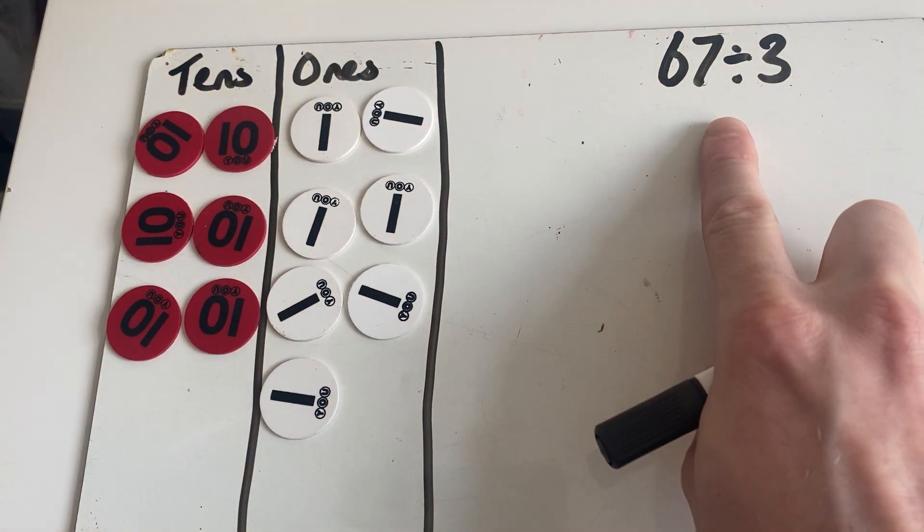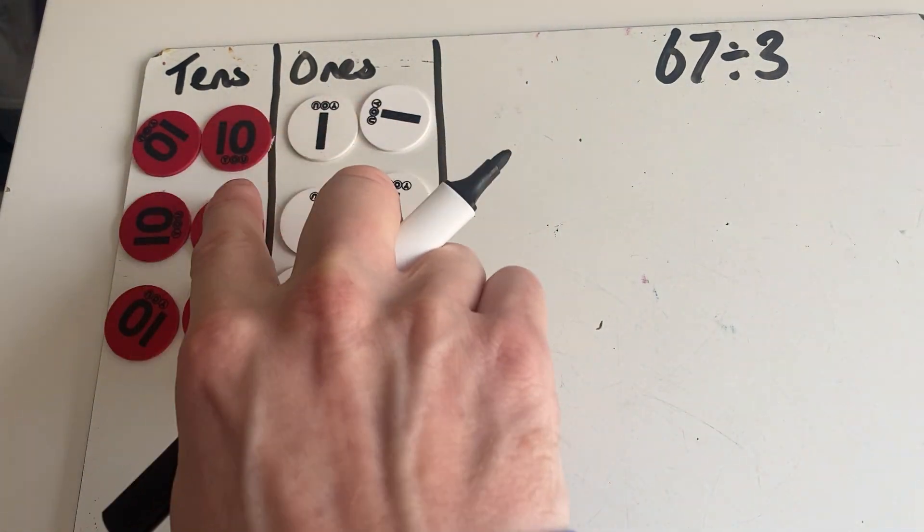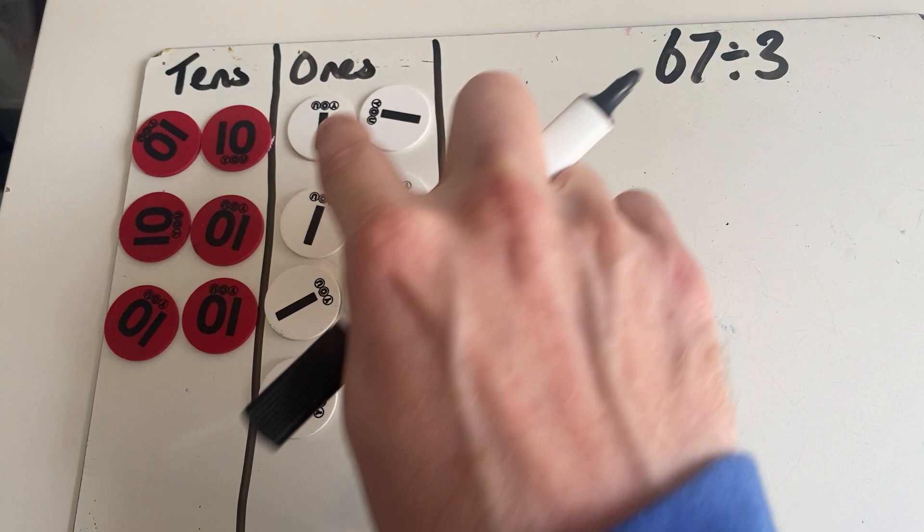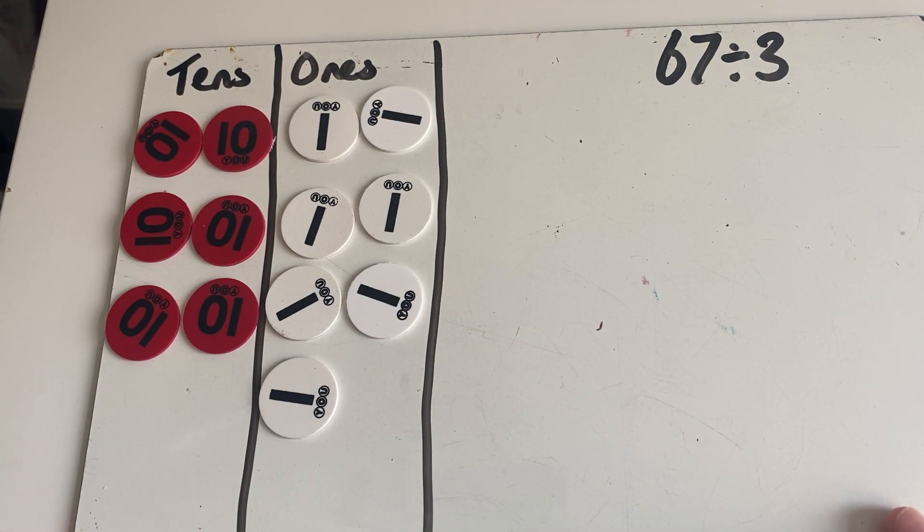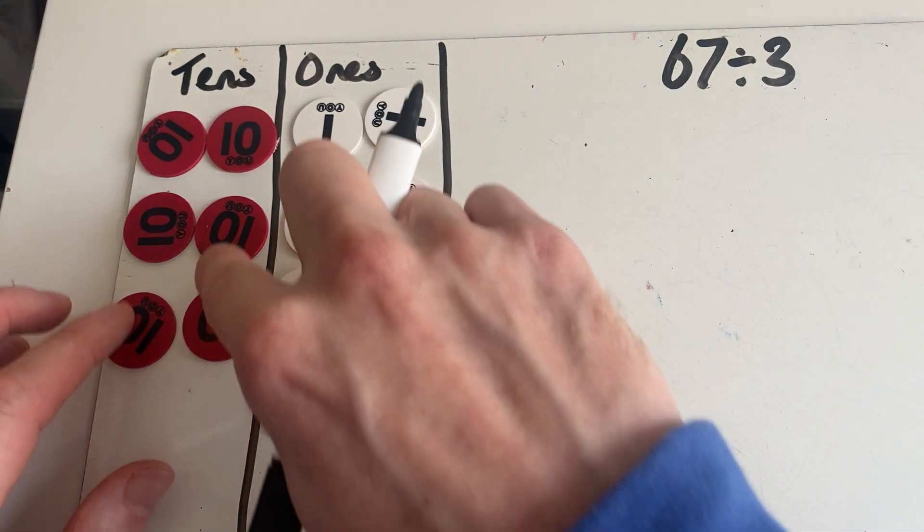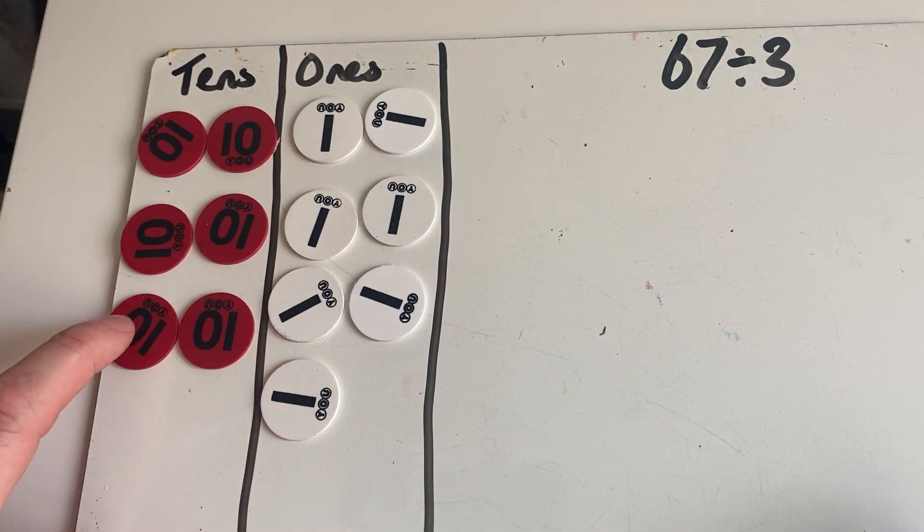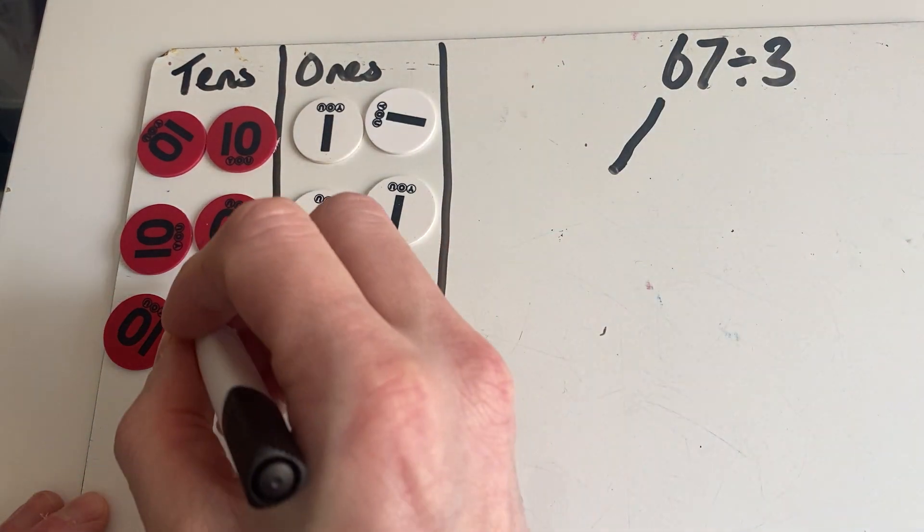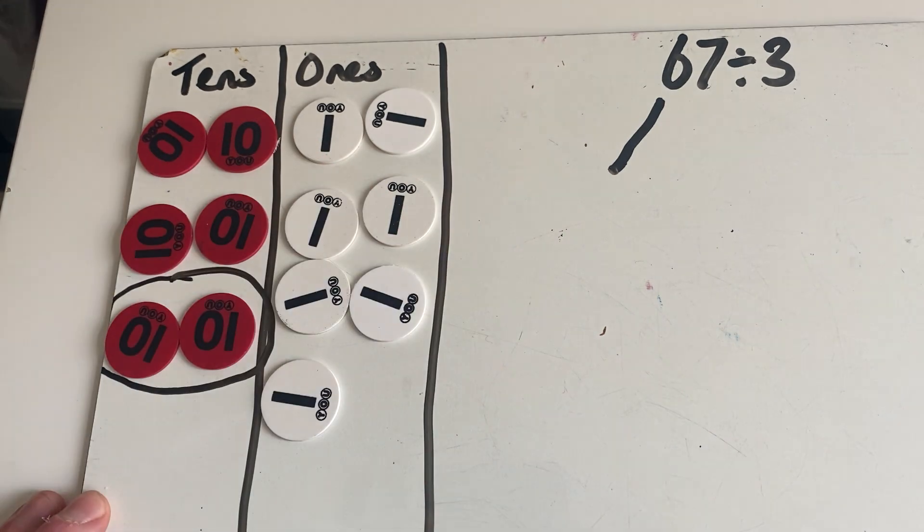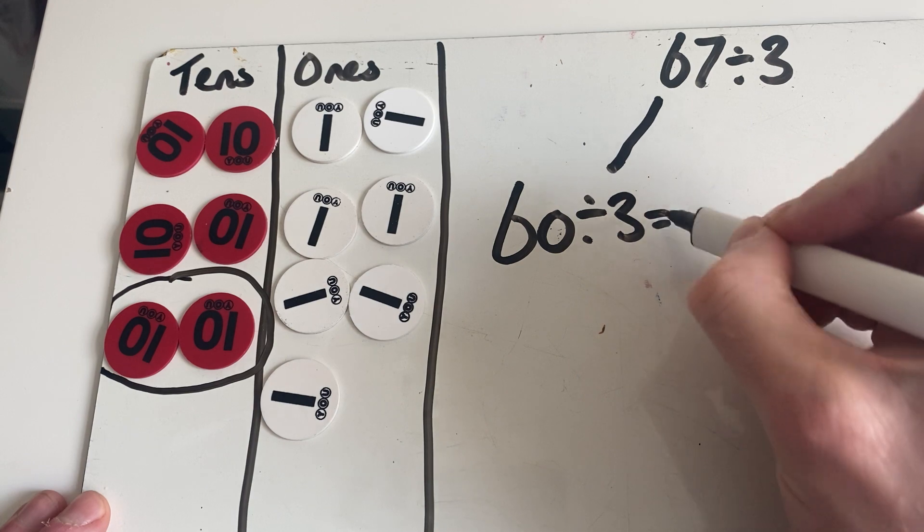So we've got 67 divided by three. We've got six tens - one, two, three, four, five, six - and seven ones - one, two, three, four, five, six, seven. The first part we're going to do is group them into three groups. As you can see it's already been done here: one group, two groups, and three groups. What we want to do is circle one group. We're just looking at the value of one group, so 60 divided by three equals 20.